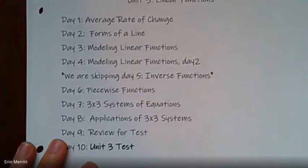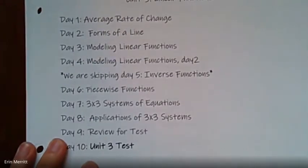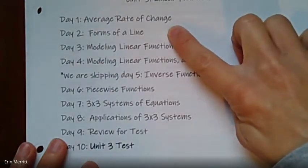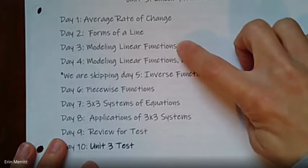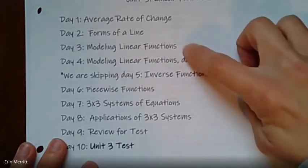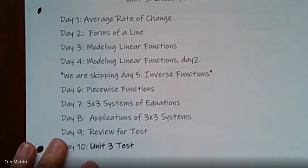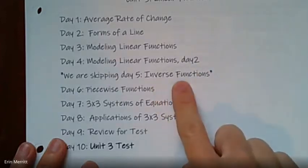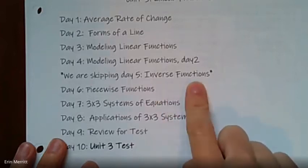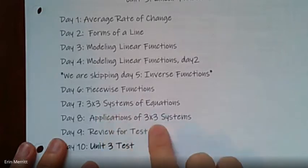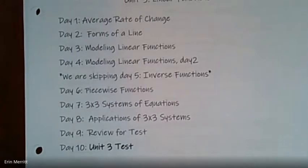So as you're looking at it here, we start with something called average rate of change. And we'll do a little example with that in a moment. Different forms of a line. One you should recognize. One might be new. Modeling linear functions and so on. That's going to take us over two days. We're skipping day five. So you're going to notice we only go from day four to day six because we've already talked about inverse functions. But don't be surprised to see these pop back up here. Then we get to do some piecewise, three by three systems. These are fun. And then word problems with those, review and test. All right. So that is what's coming for this unit.